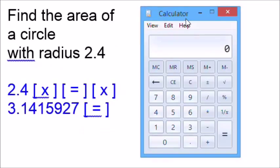Find the area of a circle with radius 2.4. Our keystrokes would be 2.4 times equals to square 2.4 times pi, which we will enter as 3.1415927 equals, and we will get an approximate area of about 18.096.